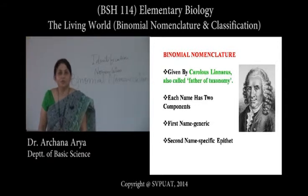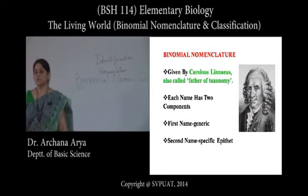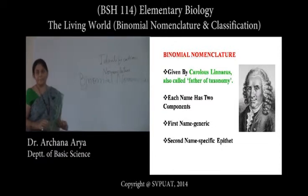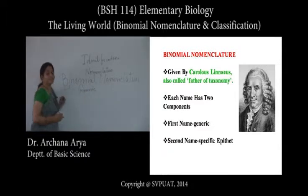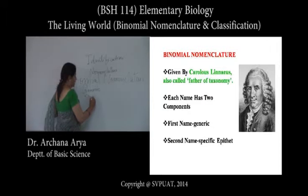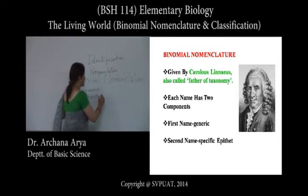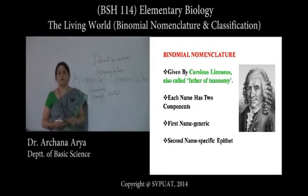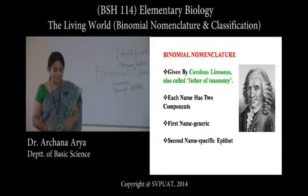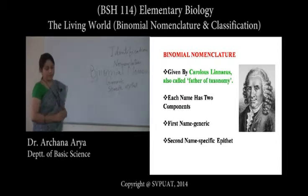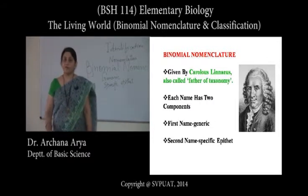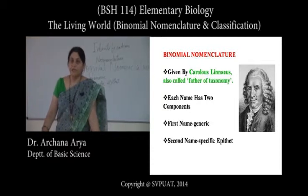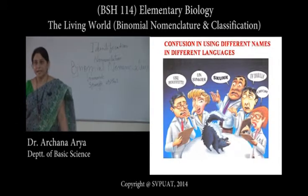This binomial nomenclature system of classification was given by Carolus Linnaeus — the biologist known for giving the system of classification. He divided any scientific name into two parts: the first name is called the generic name, and the second name is called the specific epithet. Linnaeus felt that anything specific is known by one name in a certain area or region, and by some other name in another country or region.